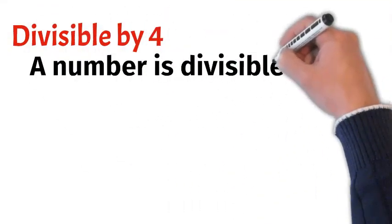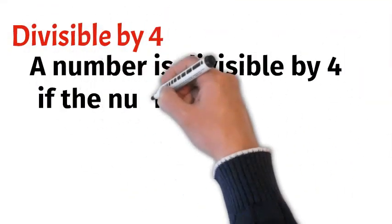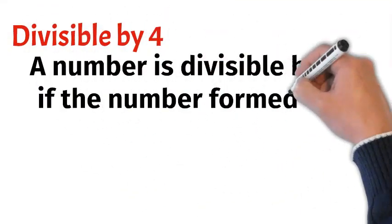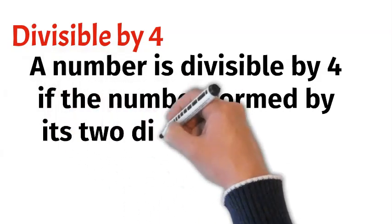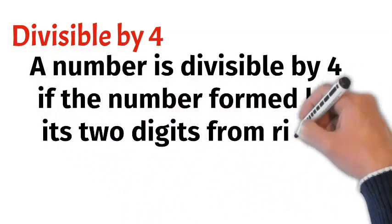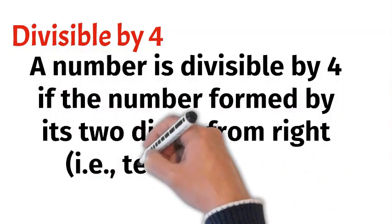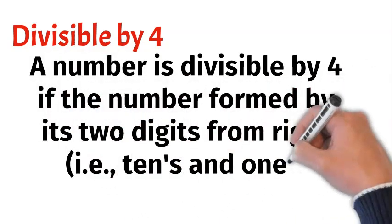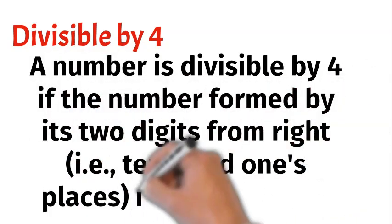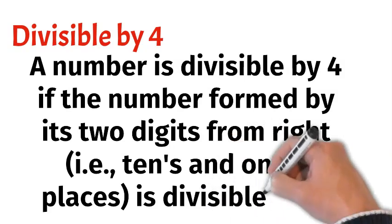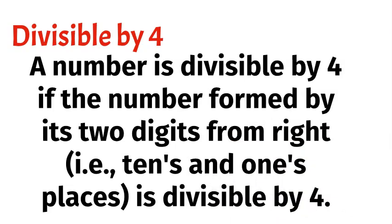Divisible by 4. A number is divisible by 4 if the number formed by its 2 digits from the right, that is the 10's and 1's places, is divisible by 4.